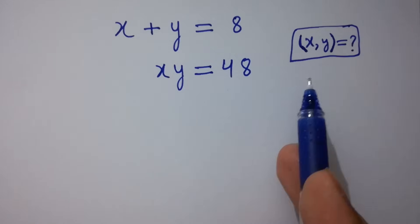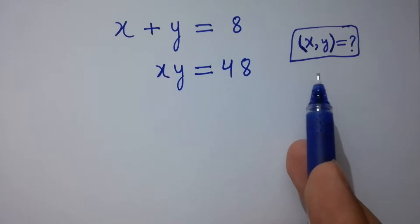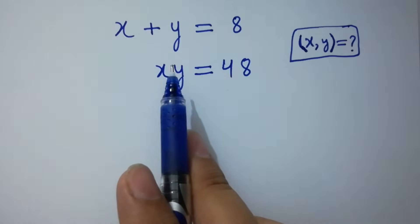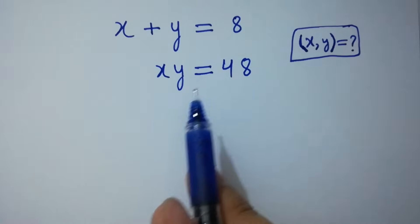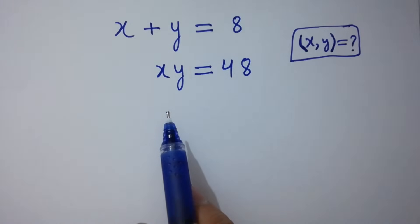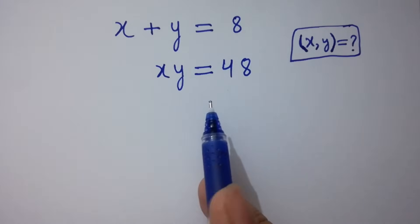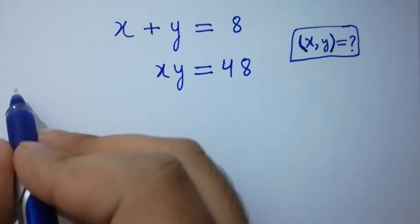Hello friends. Find the value of x and y if x plus y equals 8 and x times y equals 48. Let's have a solution.